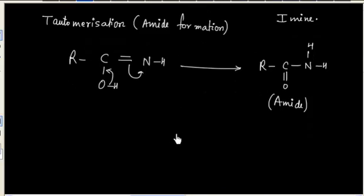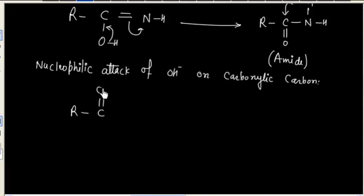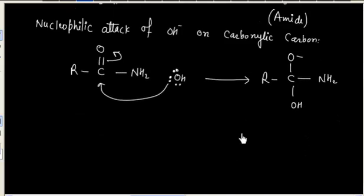Now amide can be hydrolyzed to give acid. The first step is attack of OH- on this carbon. The next step is nucleophilic attack of OH- on the carbonyl carbon. We have amide, OH- can act as a nucleophile. So we will have a tetrahedral intermediate.